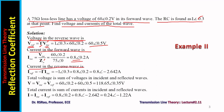The current in the reverse wave, I-reflected, equals minus gamma multiplied by I-incident, because the current reflection quotient is the negative of the voltage reflection quotient. Using that relation, I-reflected can be computed. Gamma and I-incident are available, so multiplication leads to 0.8 angle minus 2.642. The total voltage is the sum of incident and reflected voltages: V = V-incident + V-reflected. Similarly, total current is the sum of incident and reflected currents.